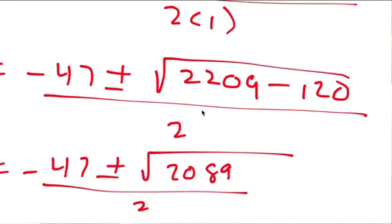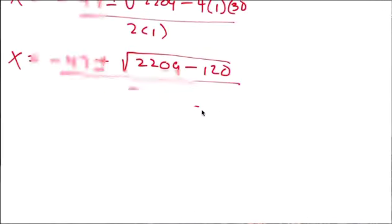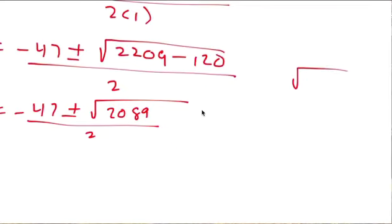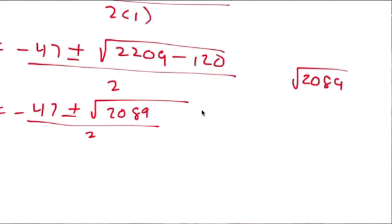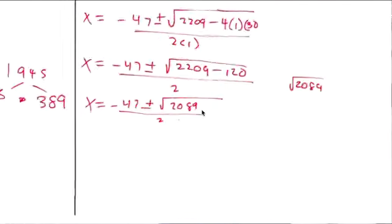We get x equals negative 47 plus or minus the square root of 2089, divide by 2. Let's see if 2089 is a perfect square — it is not. Digit sum gives 19, so 3 doesn't work. 2 doesn't work. 4, 5, 6 won't work. 7 — nope. So that's our answer.